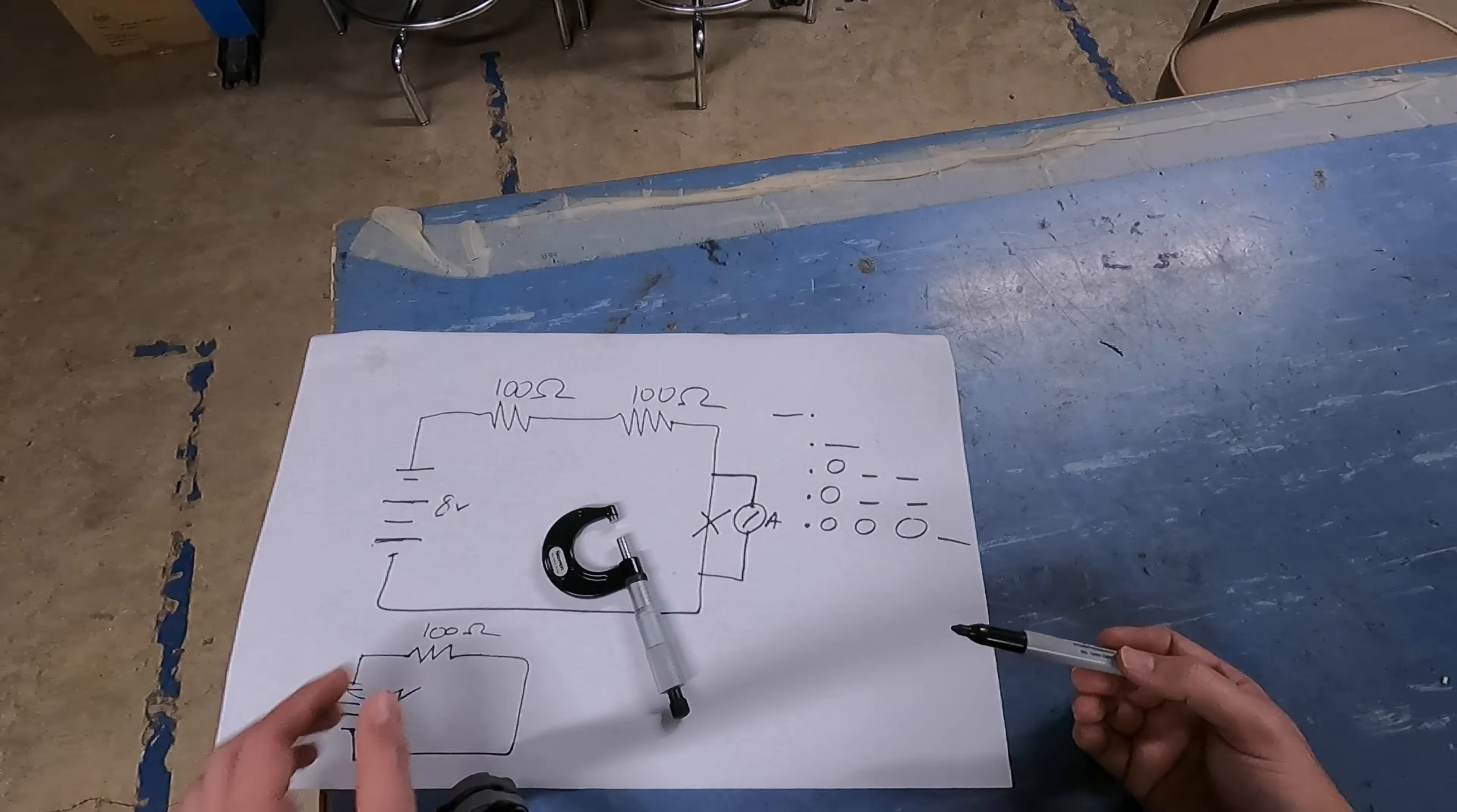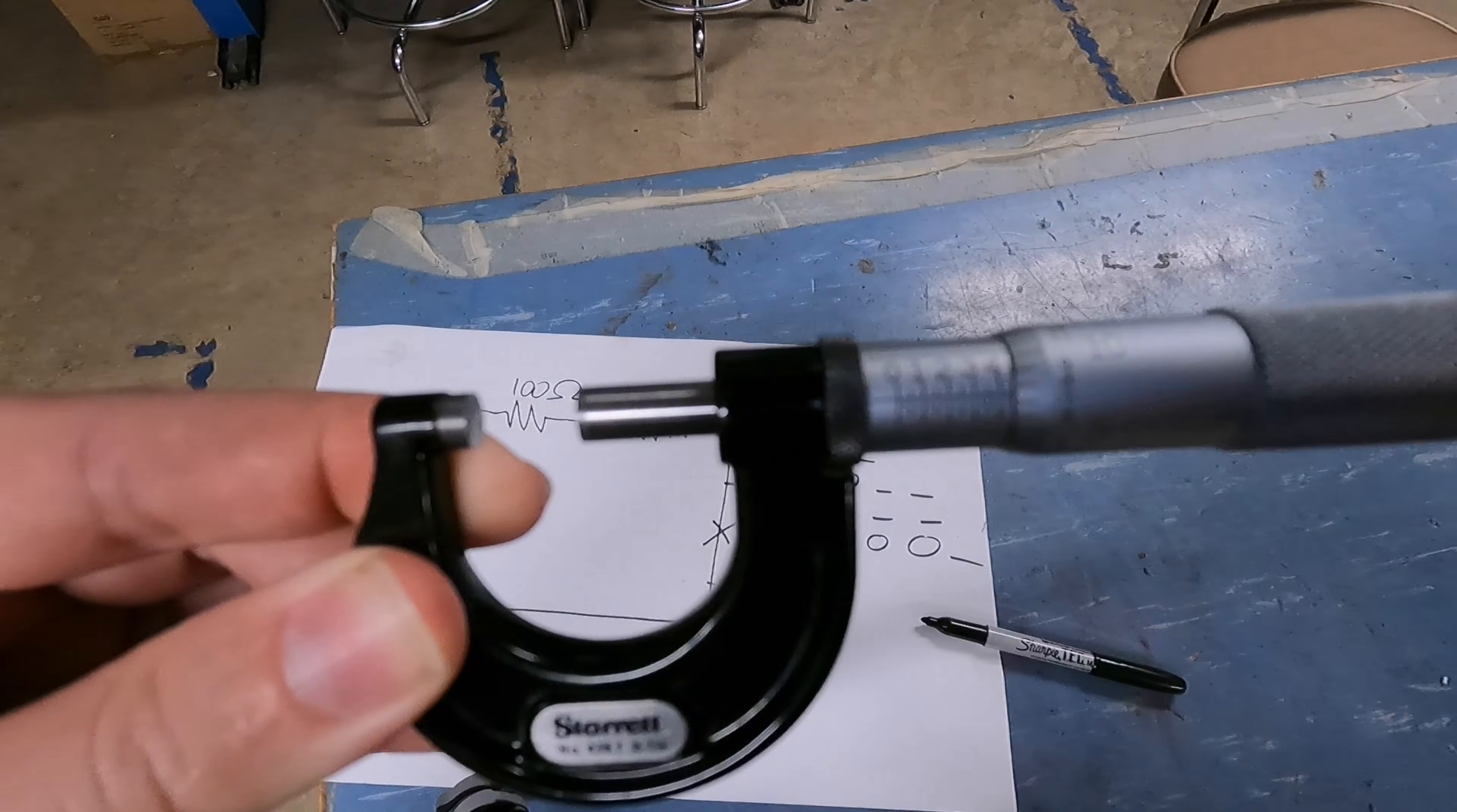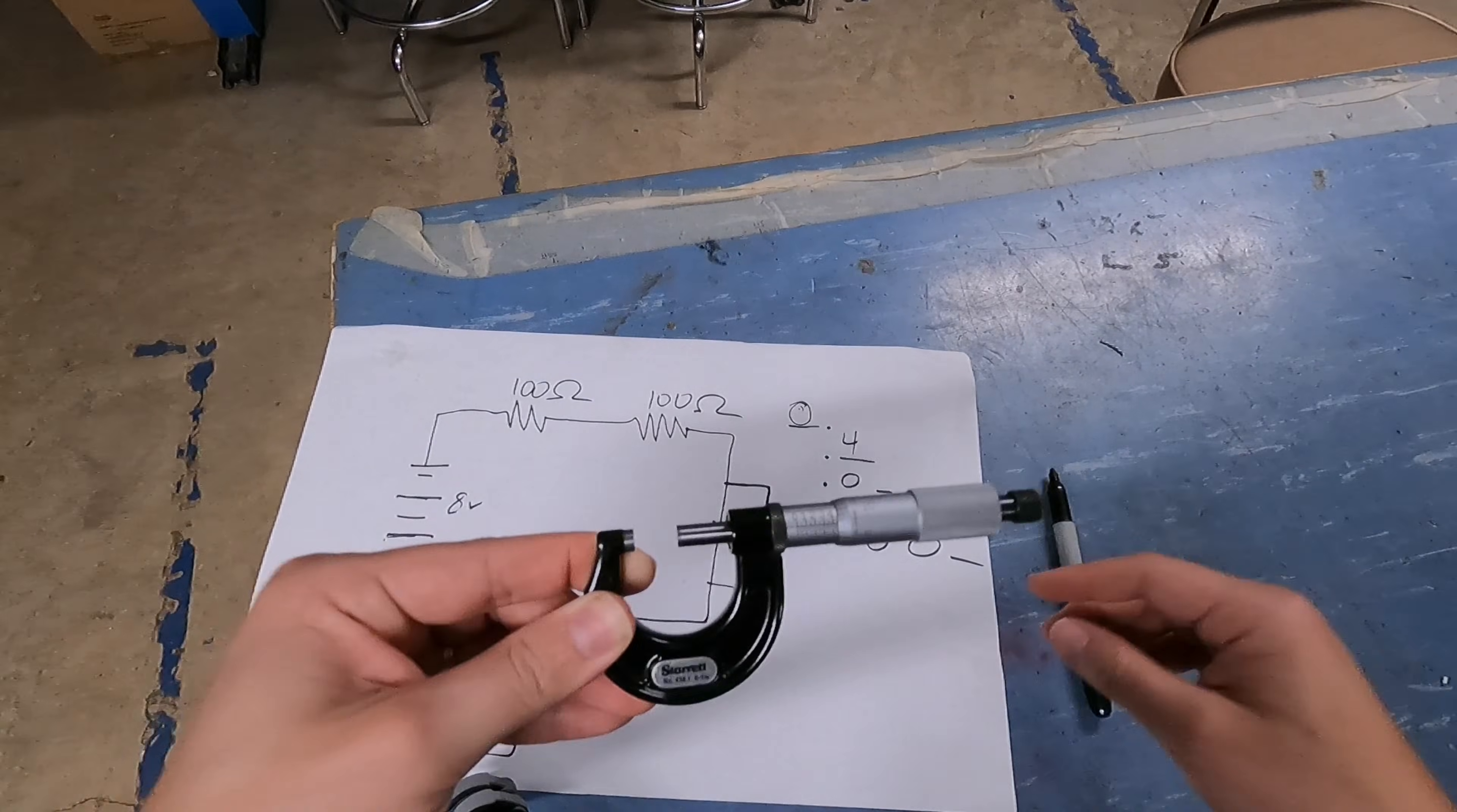So the first number that I'm going to do is my whole number. This is a zero to one inch micrometer. It says zero to one inch. So my first whole number is zero. My second number is going to be my tenths. Now, I could probably do this without the math, but it helps to show you the math. And again, let's see if I can get the GoPro to focus on it, but that is at least four tenths. One, two, three, and four tenths. Okay, so that's now my next number.